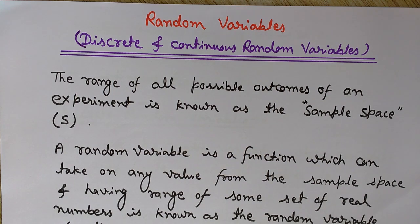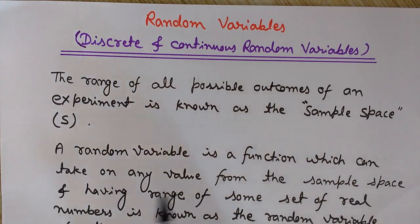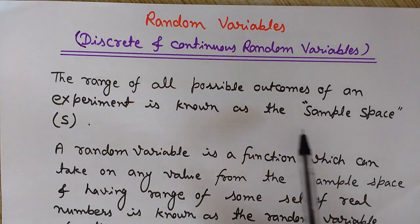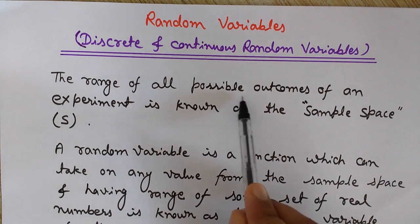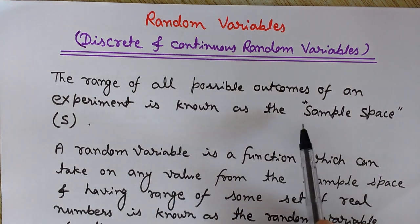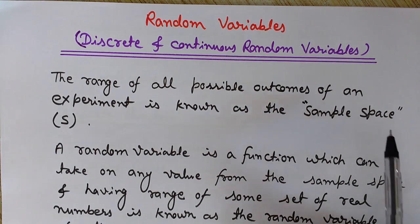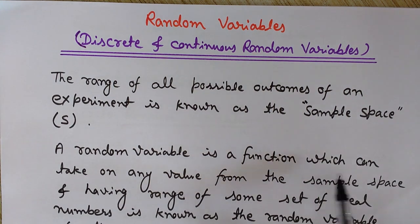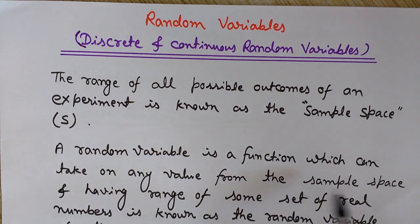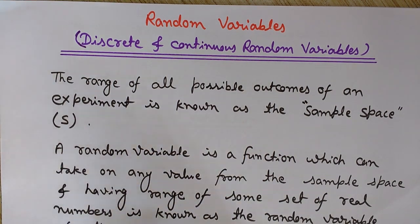A random variable is a function which can take on any value from the sample space. The sample space contains all the possible outcomes of that experiment, as we have seen in the coin example. A random variable takes on some values that are part of the sample space and having a range of some set of real numbers — this is known as the random variable of the experiment.